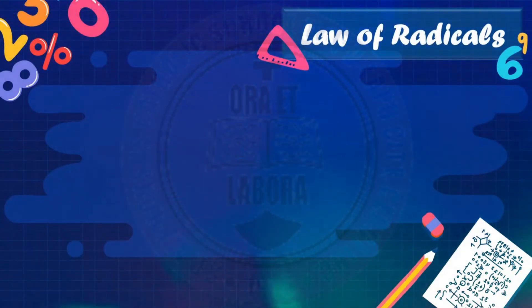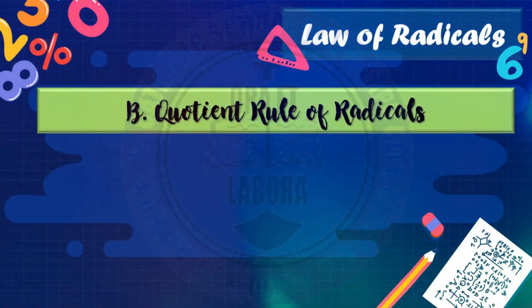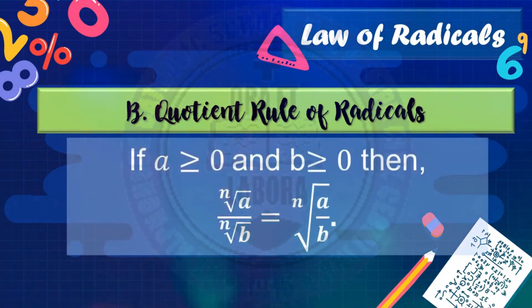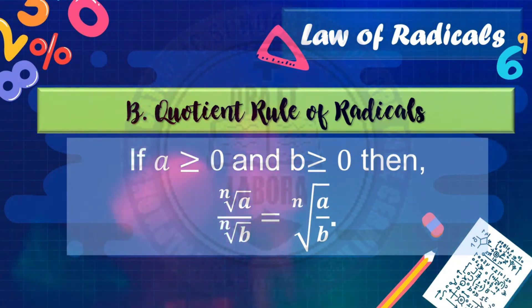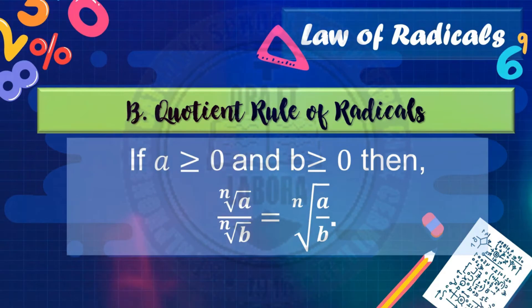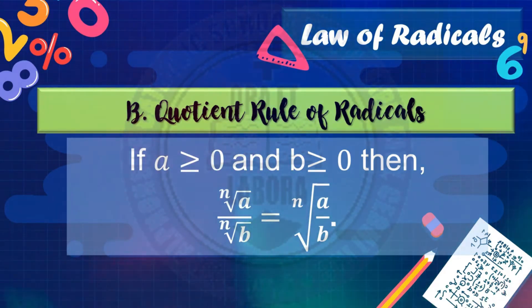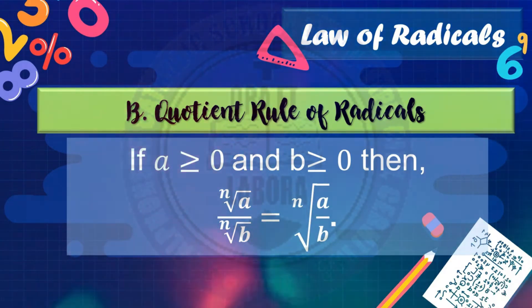The second law of radicals is the quotient rule of radicals. It states that if a is greater than or equal to 0 and b is greater than or equal to 0, then the n-th root of a over the n-th root of b equals the n-th root of a over b.